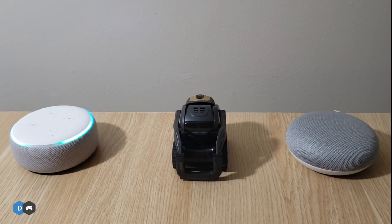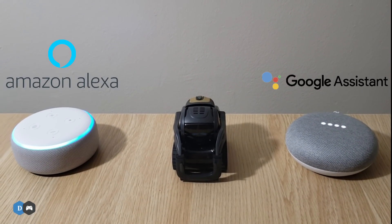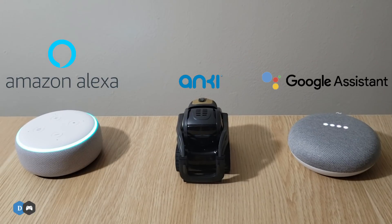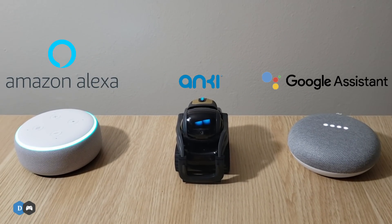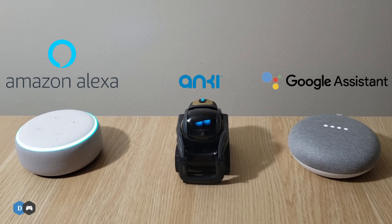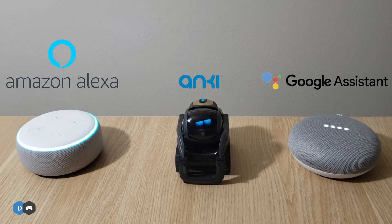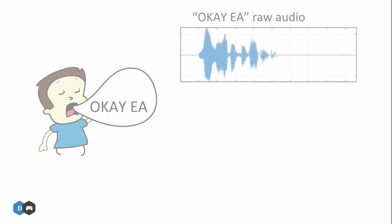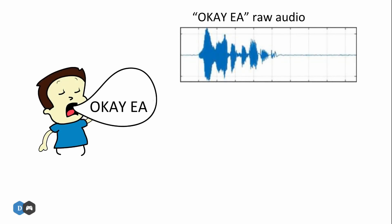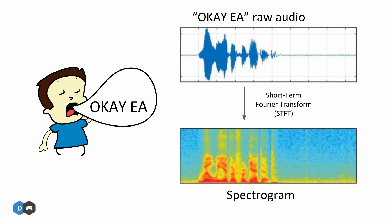Voice assistants like Amazon's Alexa, Google Home Assistant, and Anki's Vector robot have really taken off in the last few years, thanks to improved speech recognition due to deep learning. To detect a wake word like "okay", we capture raw audio from the microphone and convert it to a visual representation of the spectrum of different frequencies present in the sound, called a spectrogram — inspired by how the human ear captures audio.